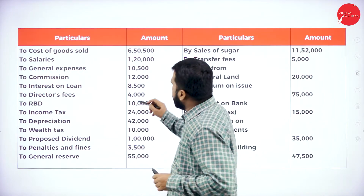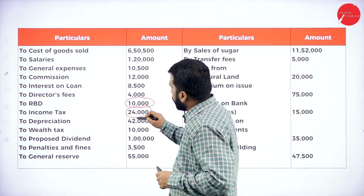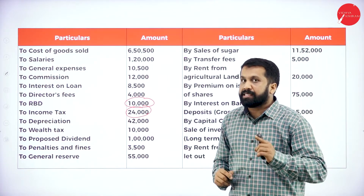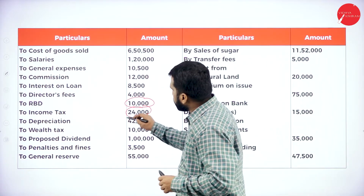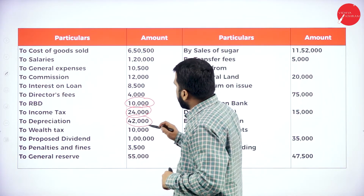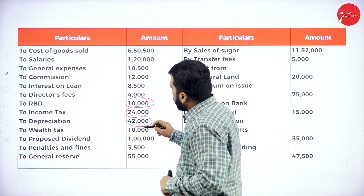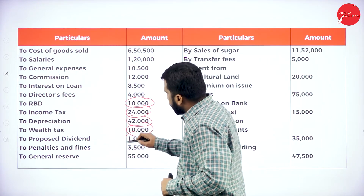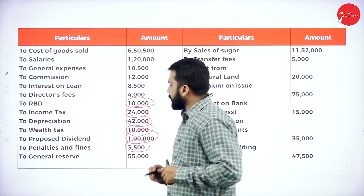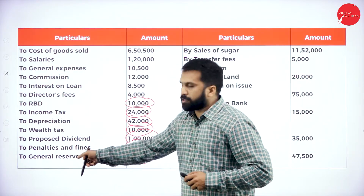Director fees — no. RBD — yes. Income tax — yes. Depreciation — yes. Why yes? Because you have adjustment. After depreciation, we have wealth tax 10,000 — take. Proposed dividend — take. Penalty and fines — take. General reserve — take, because we have the word 'reserve'.